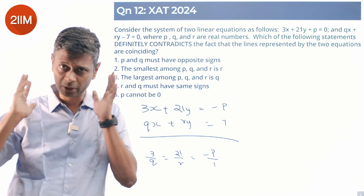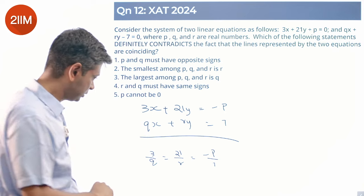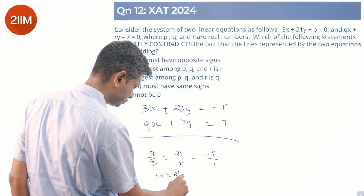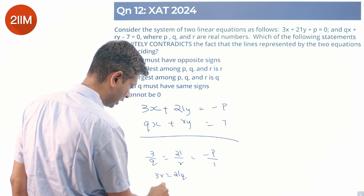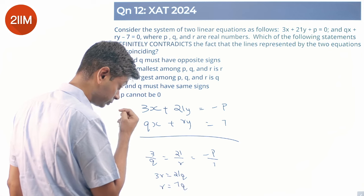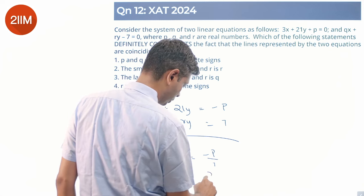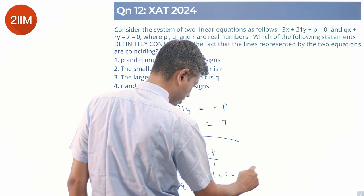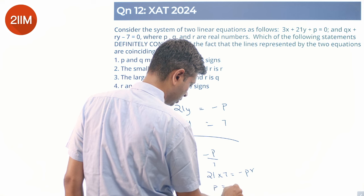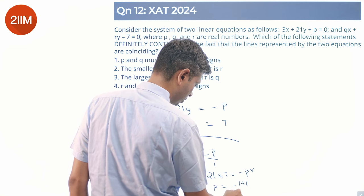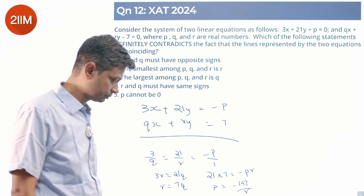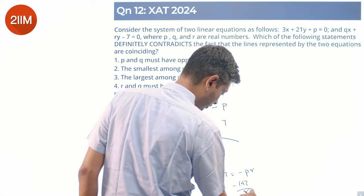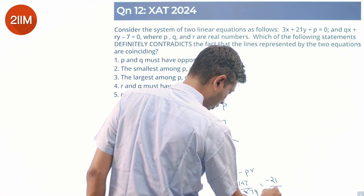So if they were coinciding, then 3r equals 21q, or r equals 7q. And 21 into 7 is minus pr, or p is minus 147 by r. R equals 7q, so we can say minus 147 by 7q, which is minus 21 by q.